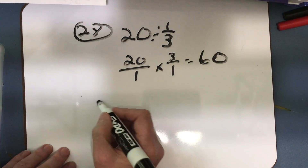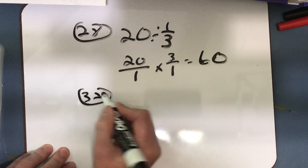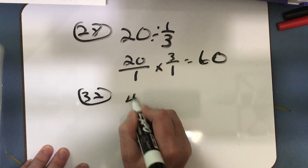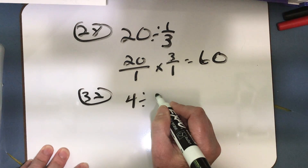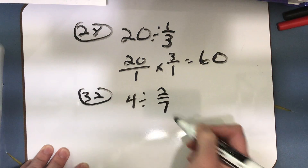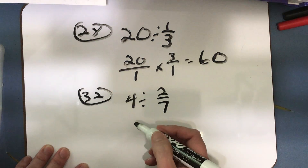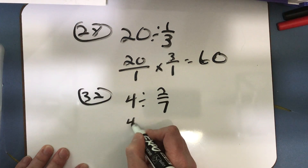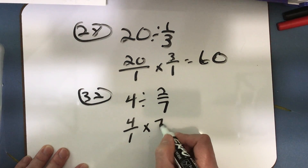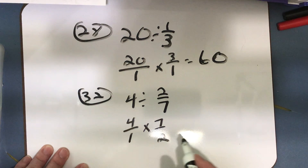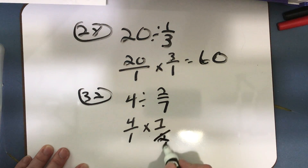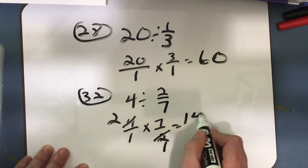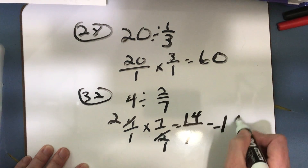I'm going to do number 32. Number 32 is dividing a whole number by a fraction. So 4 divided by 2/7. Remember, multiply by the reciprocal of the divisor. So make this 4/1, because we have to make that a fraction, times 7/2. Then I can simplify — 2 goes into 2 once, 2 goes into 4 twice. And I get 14/1, which equals 14.